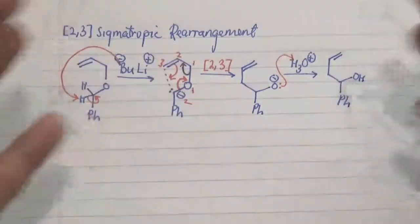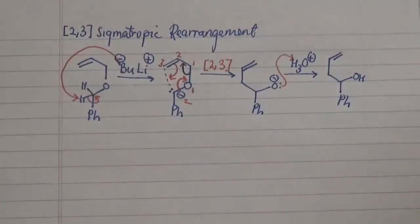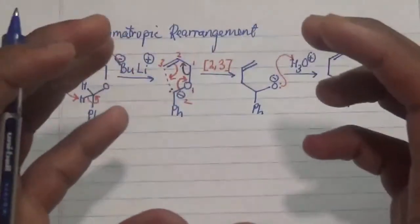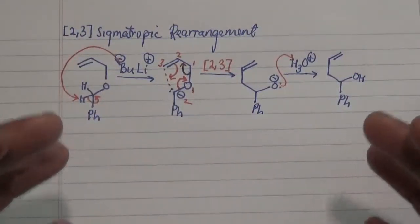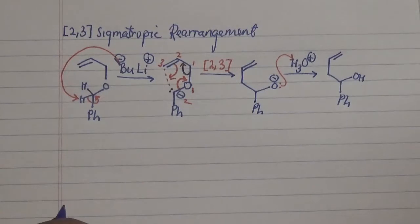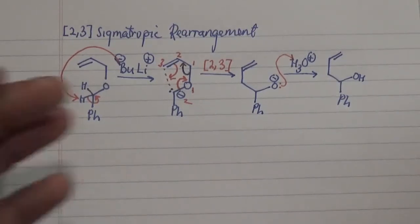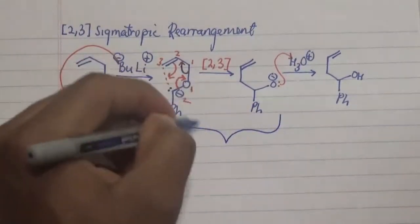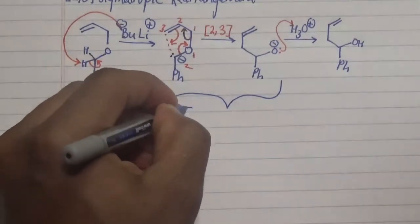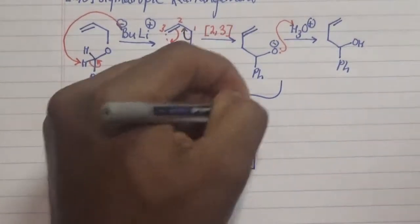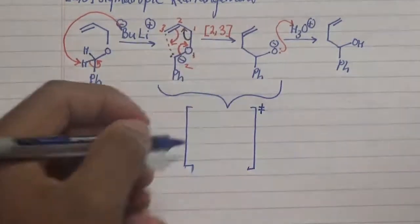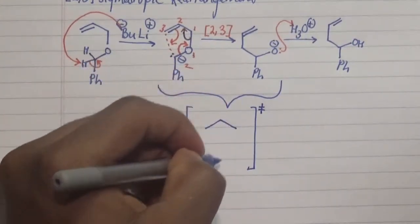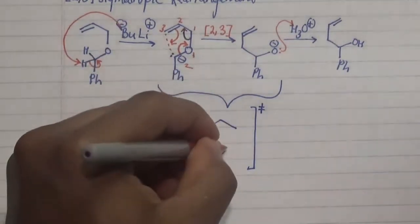Now this can seem simple, but we need to be able to look at the transition state — how is this five-membered ring actually structured? This five-membered cyclic transition state is not quite chair-like. If we look at this pathway, on one side we have our three members and on the other side we have our two members.